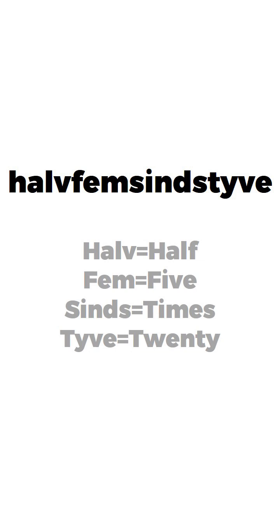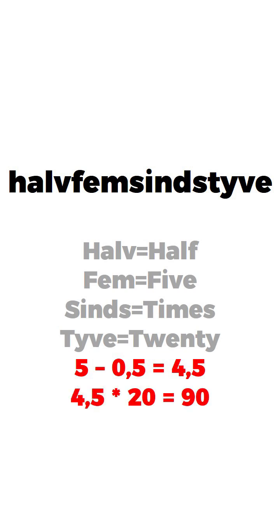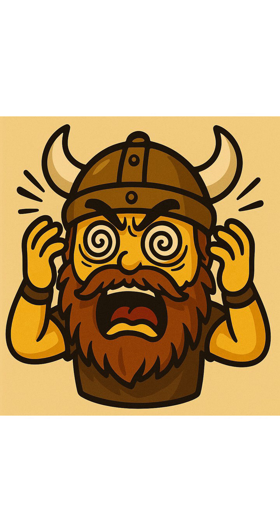5 times 20 — that is 5 minus 0.5 equals 4.5. 4.5 multiplied by 20 is 90. Absolute insanity!